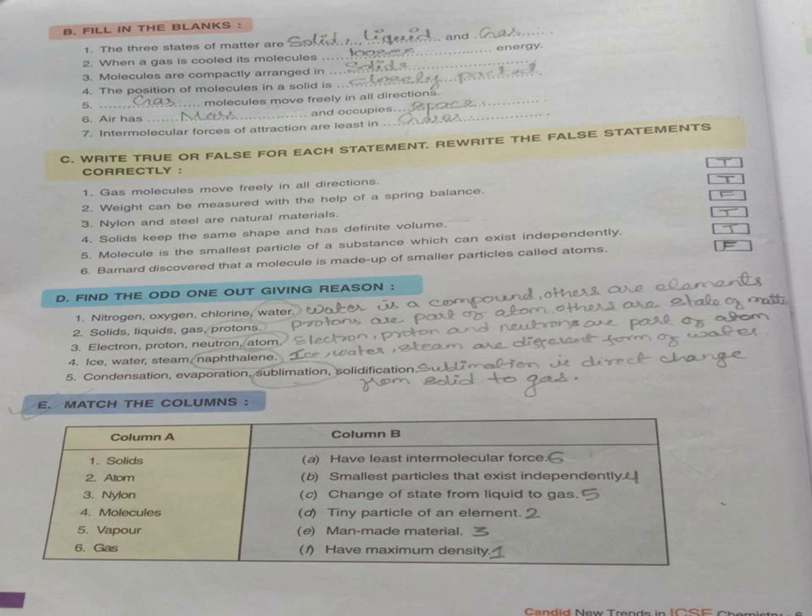Number 5, molecule is the smallest particle of a substance which can exist independently. True. Though the smallest part of a substance is atom, but atom cannot exist independently. So, molecule is correct answer. It is true. Number 6, Barnard discovered that molecule is made up of smaller particles called atom. This is false because it is John Dalton who discovered the atoms.